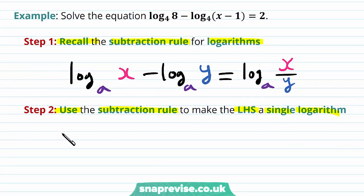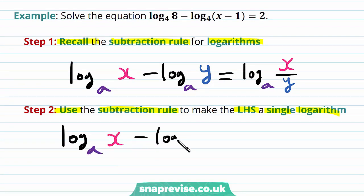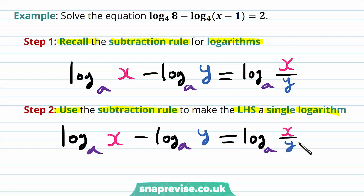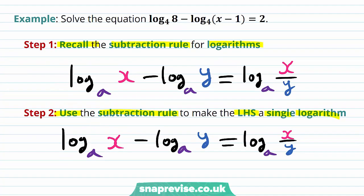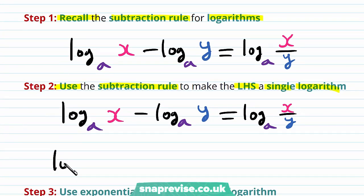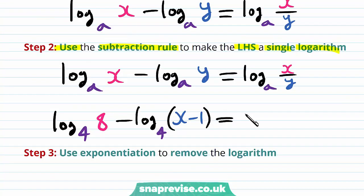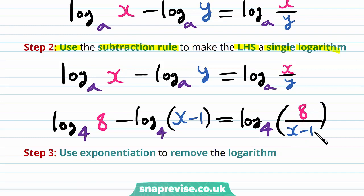Our subtraction rule is that the log base a of x minus the log base a of y is equal to the log base a of x over y. So our left hand side expression, which is log base 4 of 8 minus log base 4 of x minus 1, will now become the log base 4 of 8 over x minus 1.